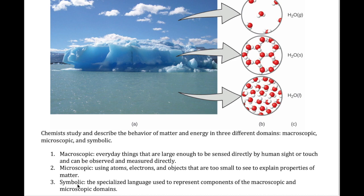The symbolic representation is basically the equations we use to relate the microscopic with the macroscopic. So when we use equations like the ideal gas equation, for example, we're basically trying to explain how the pressure of a gas in a balloon can be explained by the behavior of the gas molecules that are filling that balloon.